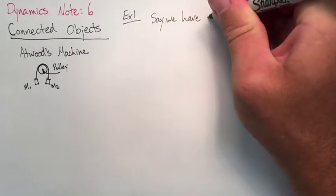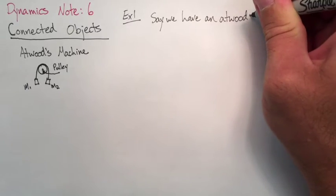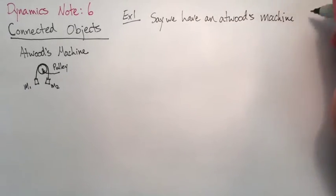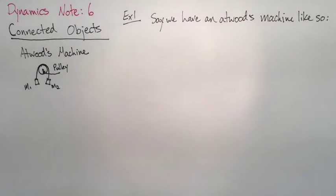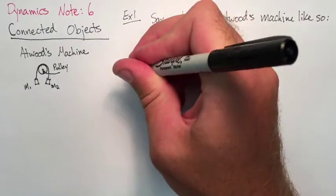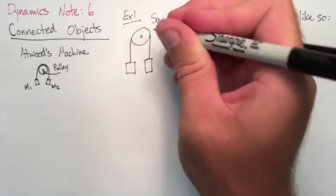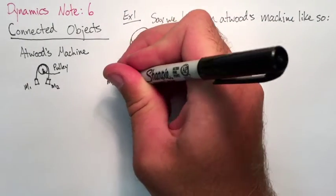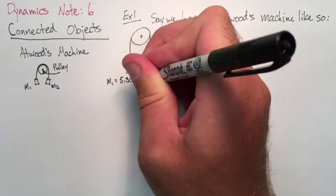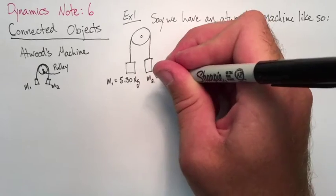So let's do an example here. Let's say we have an Atwood's machine set up like so. Mass one on the left, mass two on the right. Mass one will be 5.3 kilograms. Mass two will be 5.6 kilograms.